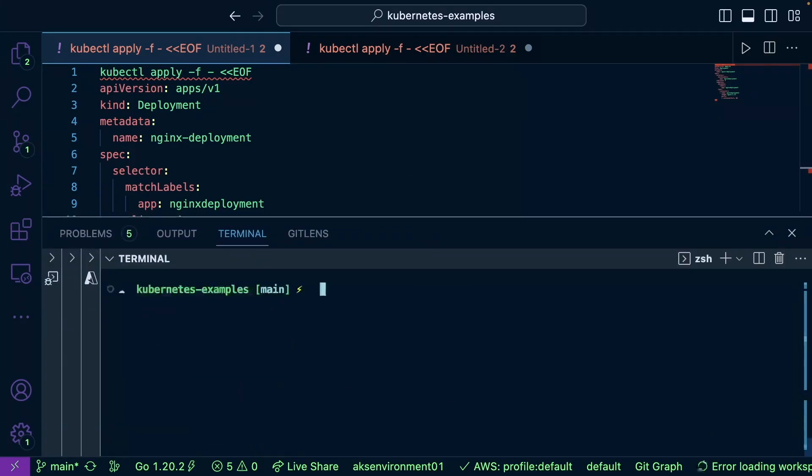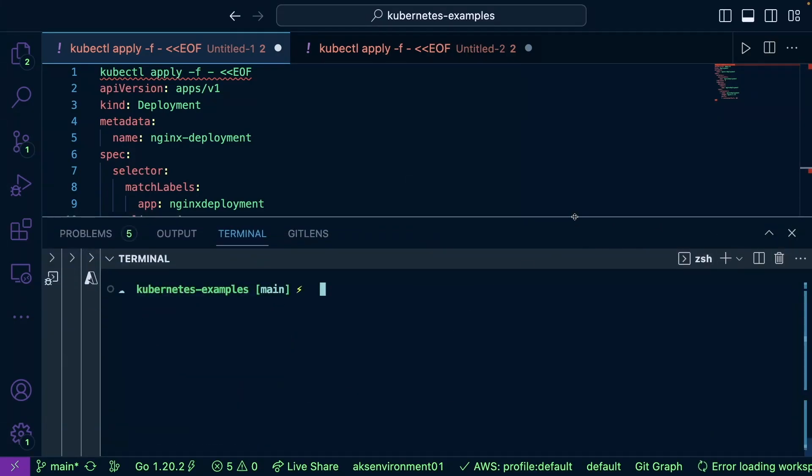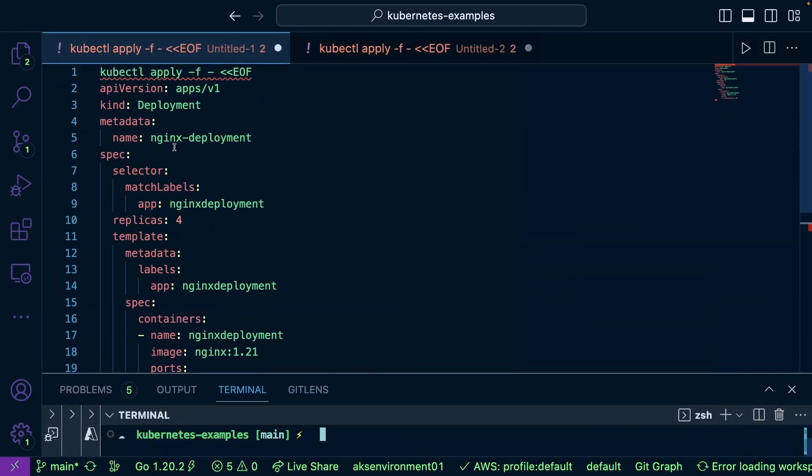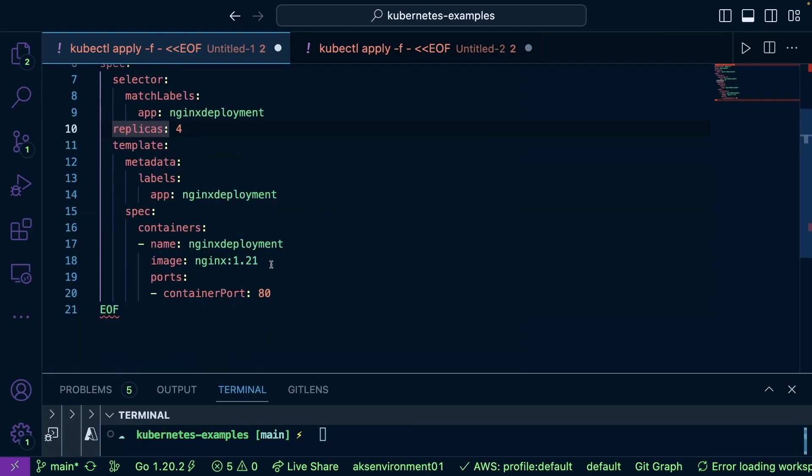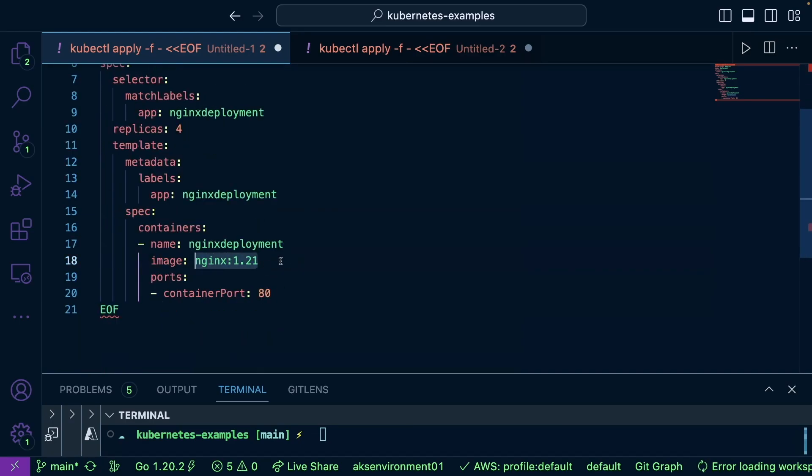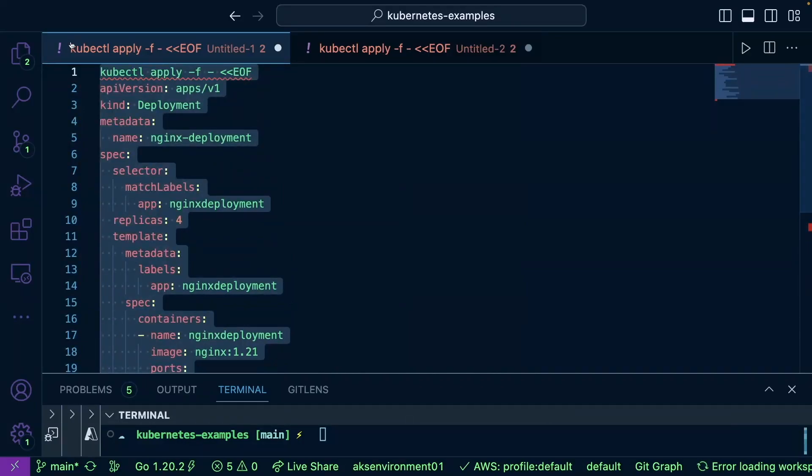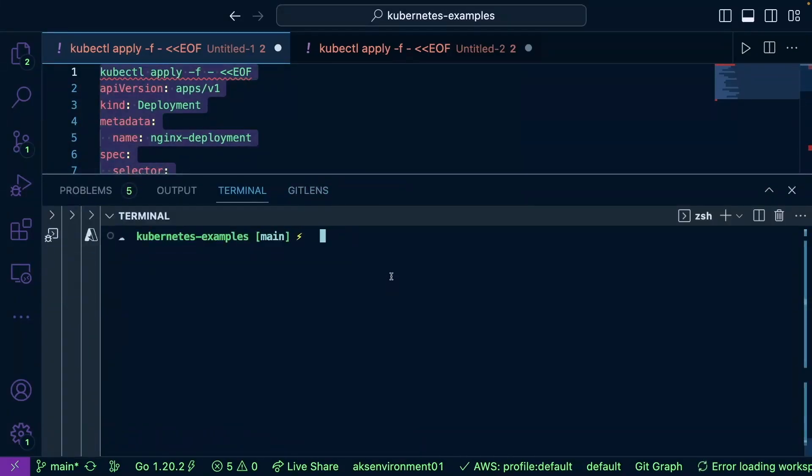Let's say I have one deployment here. This deployment is going to deploy four replicas of an Nginx application, and this container image version is 1.21 of Nginx. Let's go ahead and deploy this.